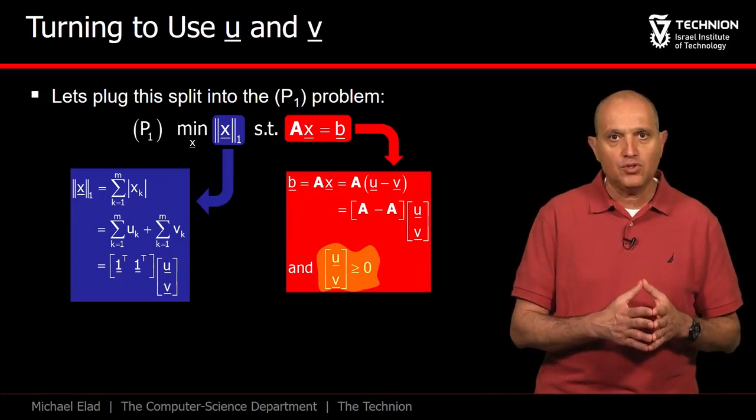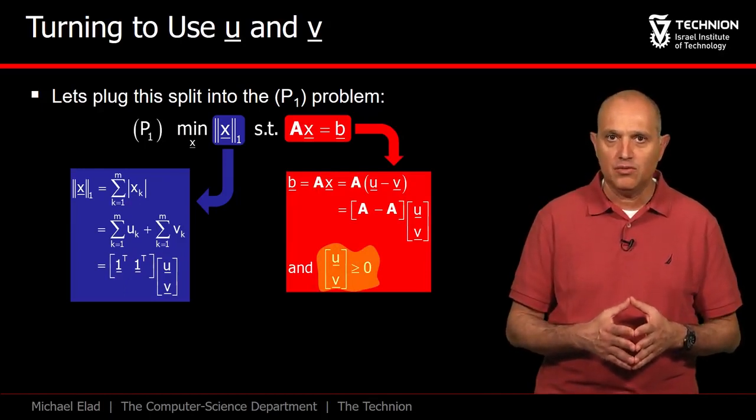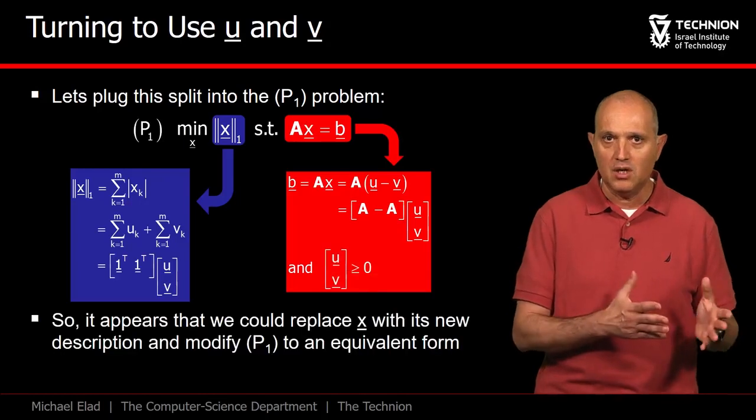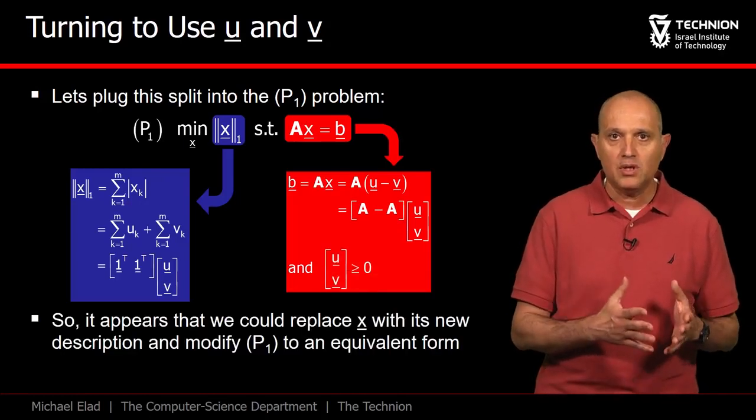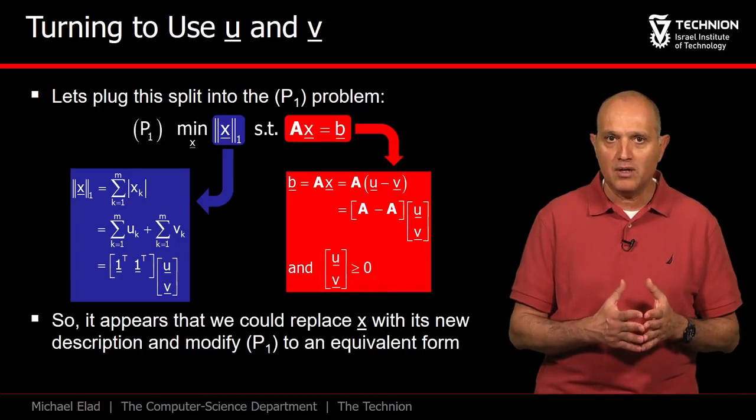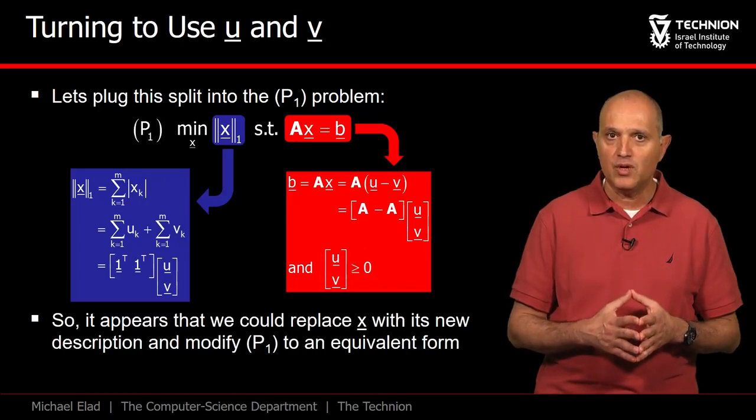One last thing: we must force u and v to be non-negative to follow the split we suggested. With these steps, we get a new and equivalent description of P1 in terms of the vectors u and v.